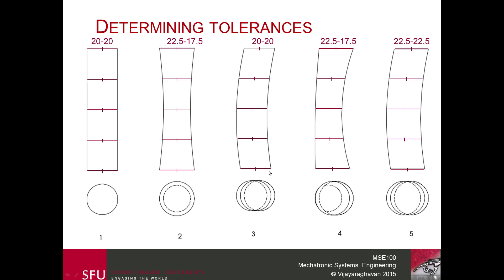For another peg, the top surface measures 22.5 and the bottom around 17.5, so the cross section changes — it's a little larger at one end, smaller at the other, bending from one side to the other.